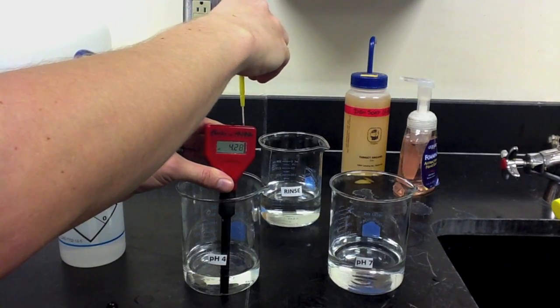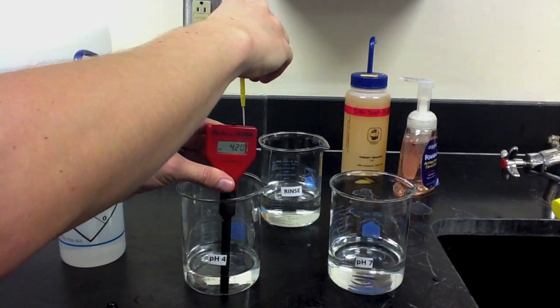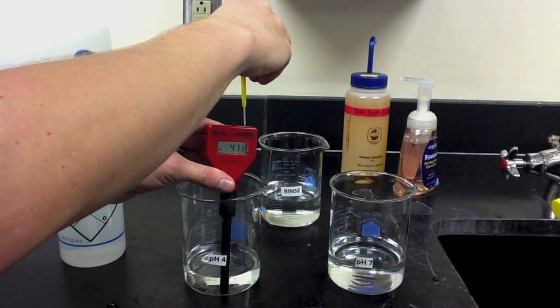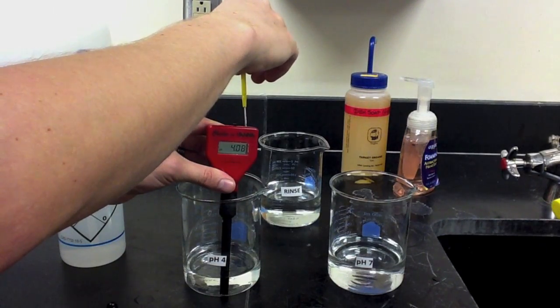Once we've obtained it at 4.00, our pH meter is now calibrated and we're ready to use it to measure the pH of an unknown solution.